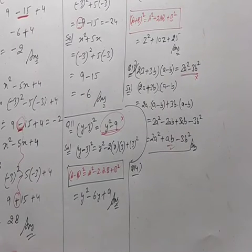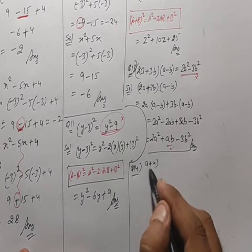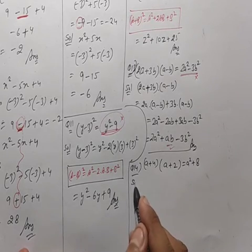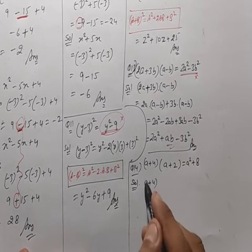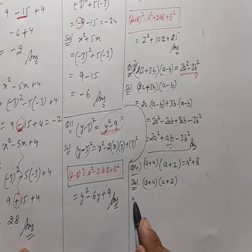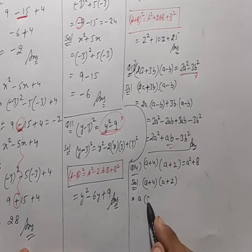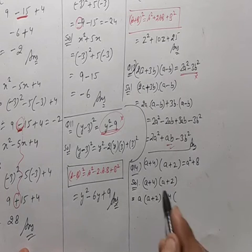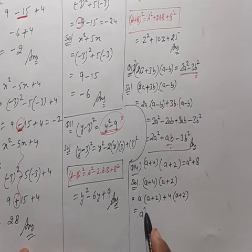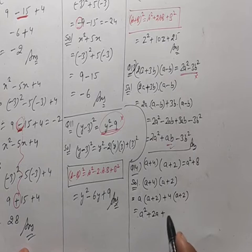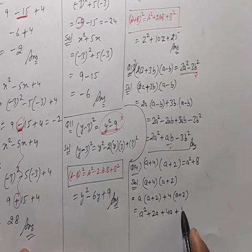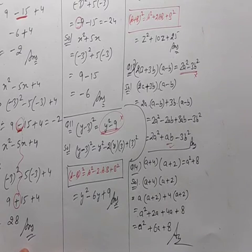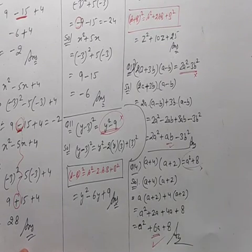Question 14: (a+4)(a+2) = a²+8 is given. Solution: a(a+2)+4(a+2) = a²+2a+4a+8 = a²+6a+8. So 6a is missing; the correct answer is a²+6a+8. The given a²+8 was incorrect.